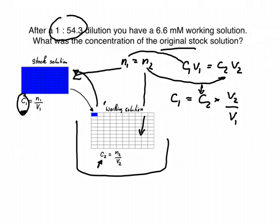That means we had one part from the stock solution and we added it so that the total volume of v2—v2 here—that would be 54.3 parts. So this would be 54.3.